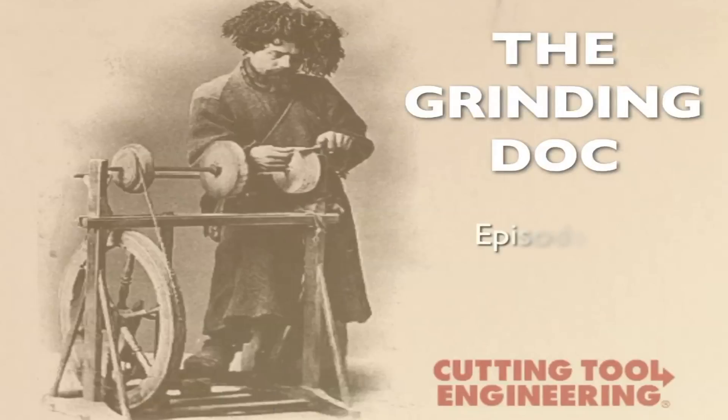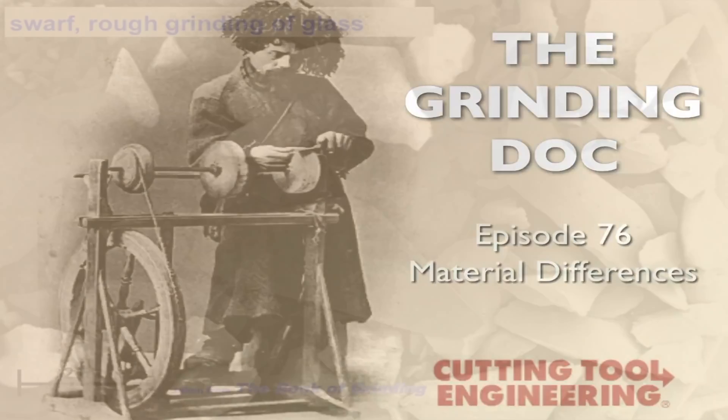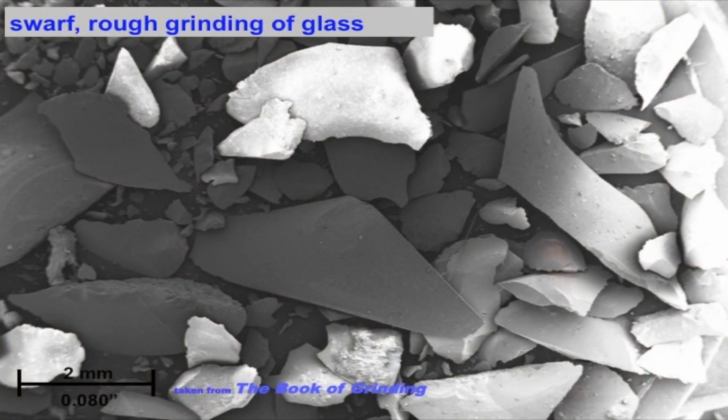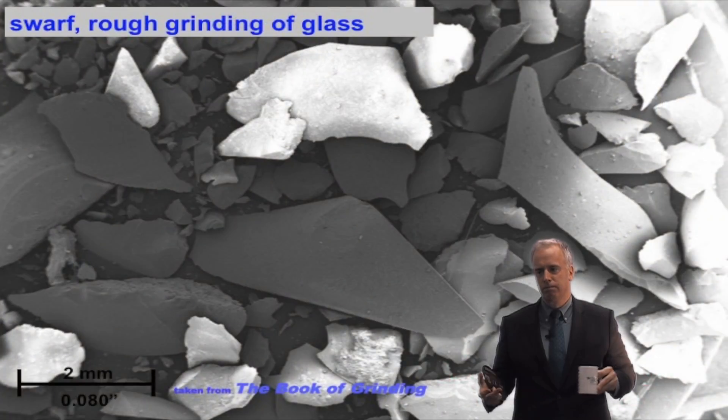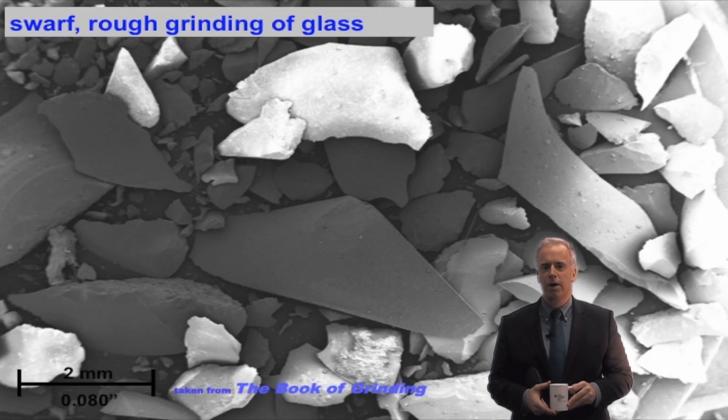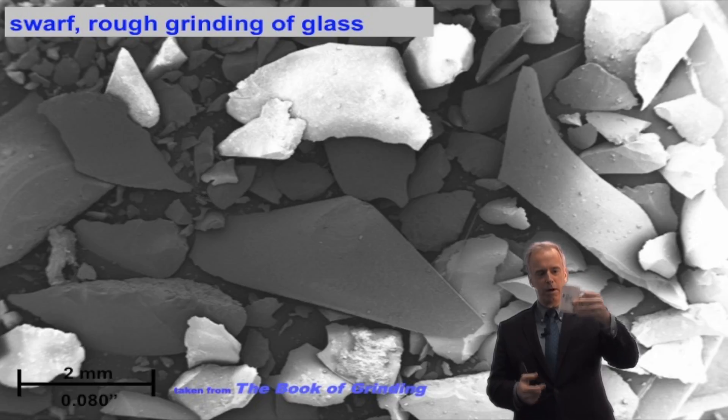Now, when you grind steel, it's a chip formation process. We know that. But if you grind a hard, brittle material, like this ceramic cup, this guy is kind of hard and kind of brittle, not too ductile.